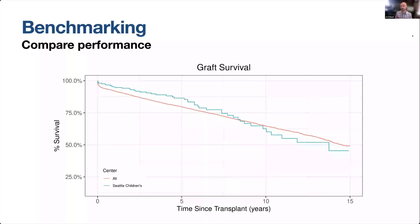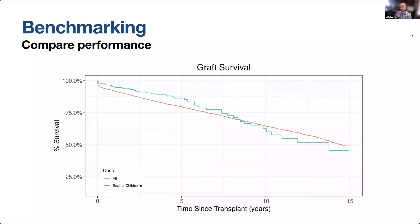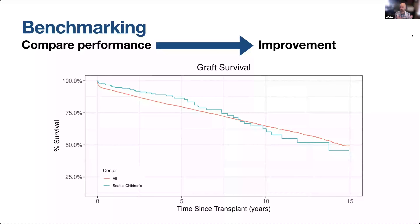So a benchmarking tool was designed initially for businesses to measure the performance of a company's products, services, or processes against those of another business, typically considered to be best in the industry or best in class. And really, the goal of benchmarking is to identify internal opportunities for improvement. And clinical organizations frequently use benchmarking tools to improve their clinical outcomes for patients by comparing specific metrics to the average performance across a group of hospitals or clinical organizations.